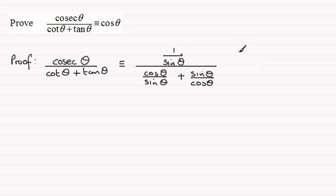So we multiply the top of the fraction by sine theta cos theta, and we multiply the bottom of the fraction by the same value, sine theta cos theta.